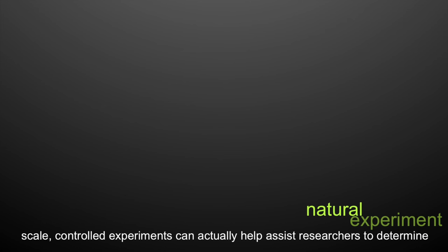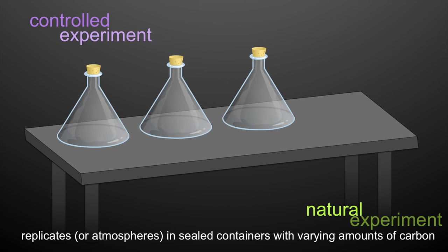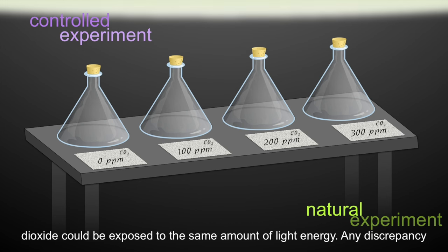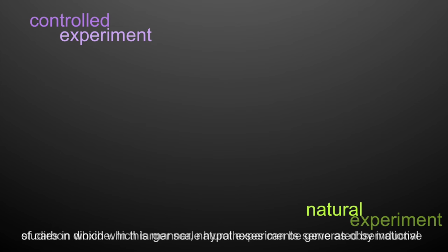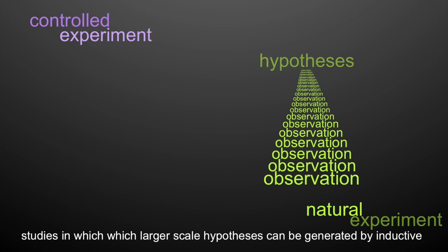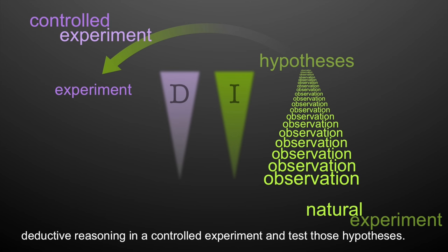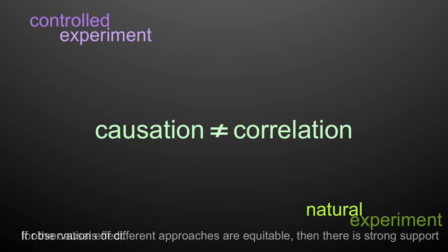However, small-scale controlled experiments can actually help researchers determine causation. For example, groups of replicate atmospheres in sealed containers with varying amounts of carbon dioxide could be exposed to the same amount of light energy. Any discrepancy in temperatures between the replicates could be attributed to the abundance of carbon dioxide. In this manner, natural experiments serve as observational studies in which larger-scale hypotheses can be generated via inductive reasoning, while smaller-scale controlled experiments test these assumptions using deductive reasoning.